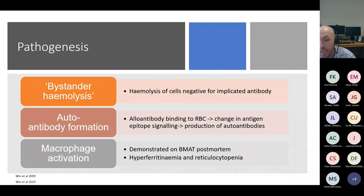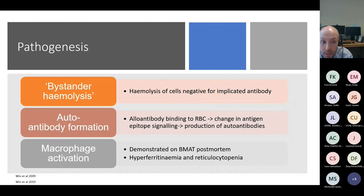Autoantibody formation is thought to occur in the context of an alloantibody which binds to the red cell, causing a conformational change in the antigen epitope signaling that leads to autoantibody production. There are also many cases demonstrating evidence of macrophage activation with hyperferritinemia and reticulocytopenia, which has also been demonstrated on bone marrow at post-mortem.